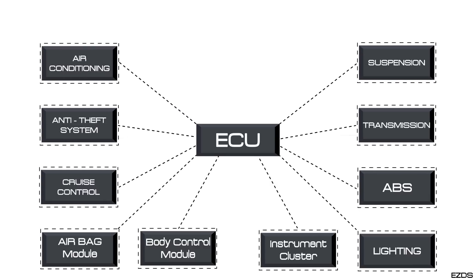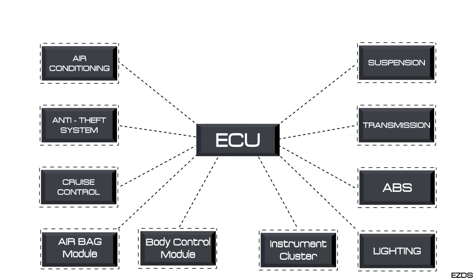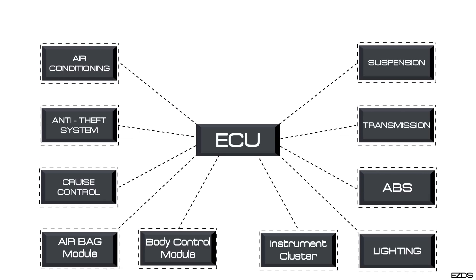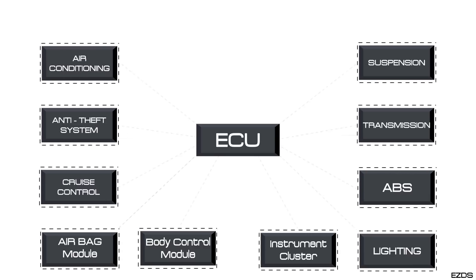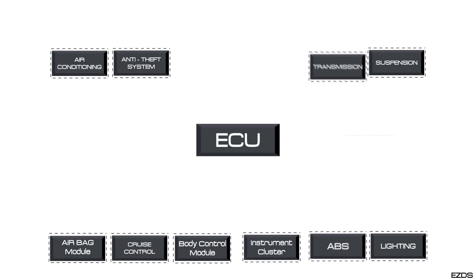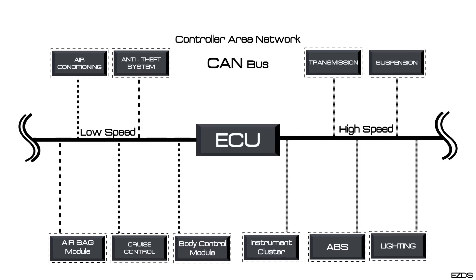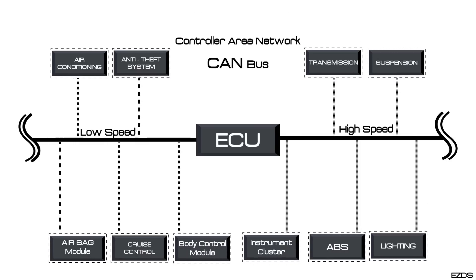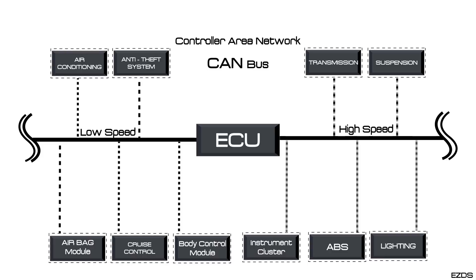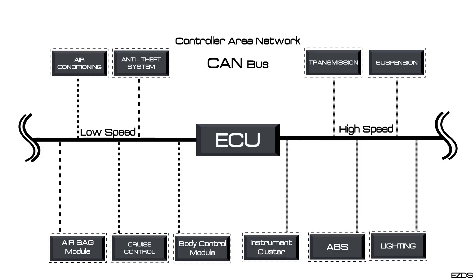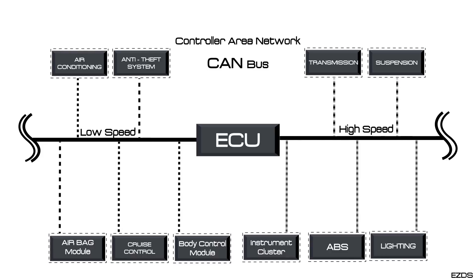In order to optimize the efficiency of the network, Bosch came up with a new protocol in 1985 called Controller Area Network. CAN allows different modules to communicate with each other using a common cable.